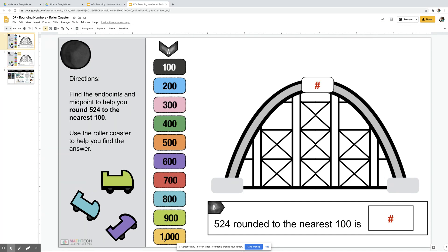Let's look at an example. Here is 524. The endpoints would be 500 and 600, and the midpoint is 550.